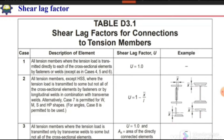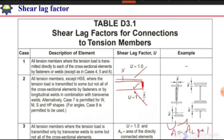The third case is all tension members where the tension load is transmitted only by transverse weld to some part but not all of the cross-section elements. If the connection is only a transverse weld between the gusset plate and the member, we consider only the connected leg of the angle. U will be equal to 1, but the area A will be equal to the area of only that one connected leg.